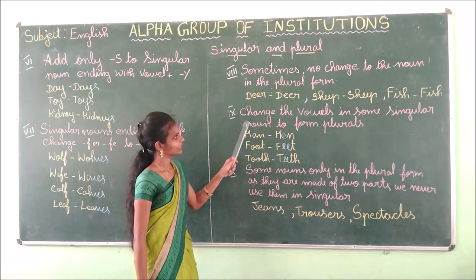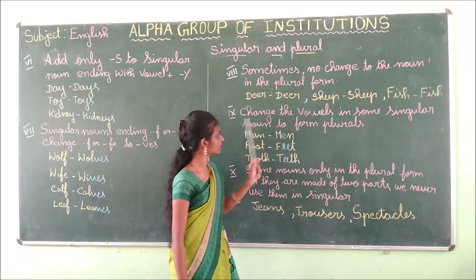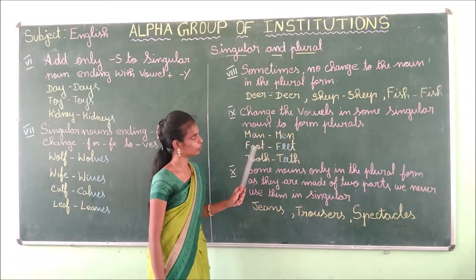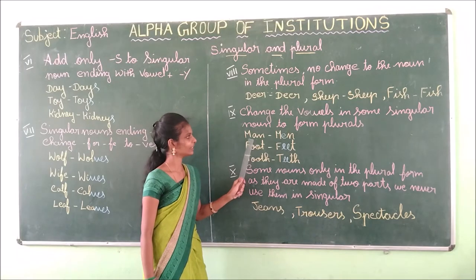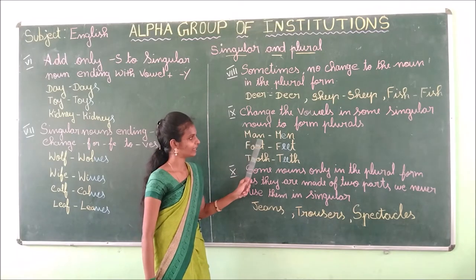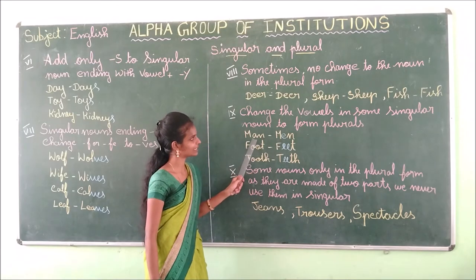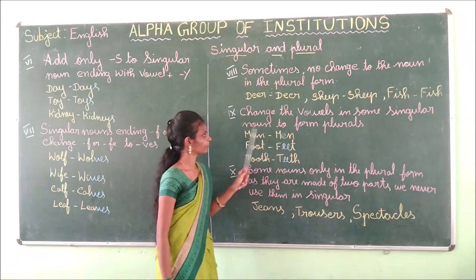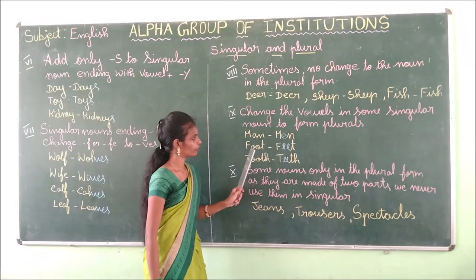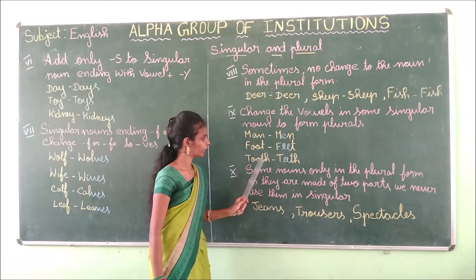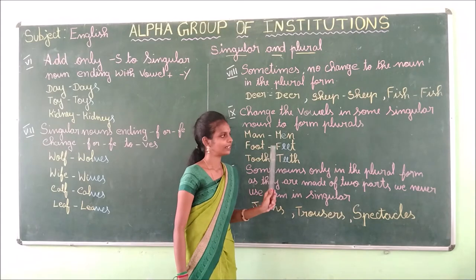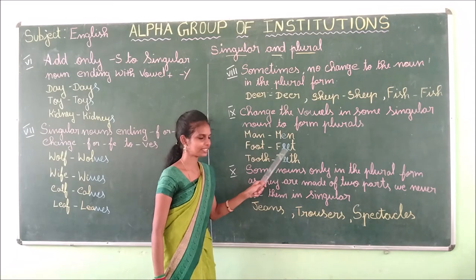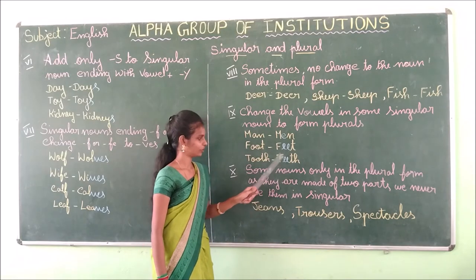Ninth rule: change the vowels in some singular nouns to form the plural. For example: man→men — we change the vowel A to E. Also: foot→feet, tooth→teeth. Repeat: man, men; foot, feet; tooth, teeth.